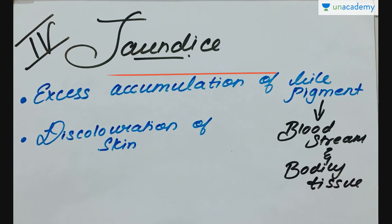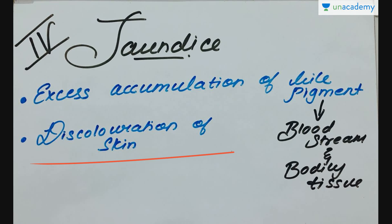Jaundice is the excess accumulation of bile pigment in the bloodstream and bodily tissue, causing a yellow to orange — and sometimes even green — discoloration of the skin, the whites of the eyes, and the mucous membranes. The degree of coloration depends on the concentration of bile pigment, i.e., bilirubin, in the blood, and the absorption and binding of bilirubin by the tissue.